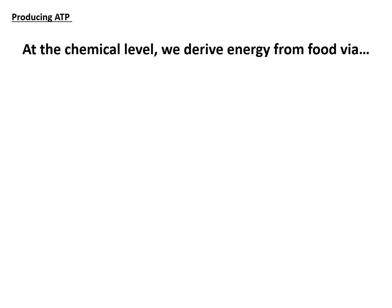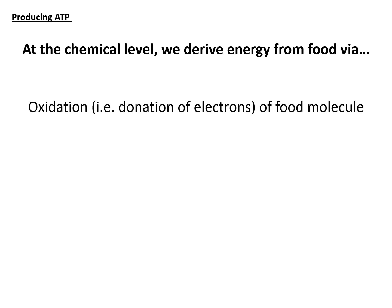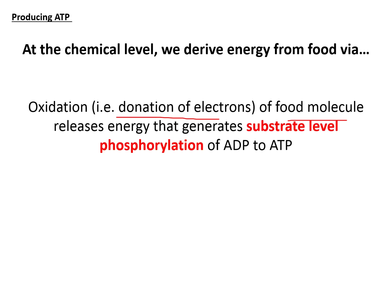At the chemical level, we derive energy from food via oxidation, which is equivalent to the loss of electrons by the food molecule. But why do we need electrons? Because it is from the flow of electrons that we derive energy to make an ATP molecule, by a process known as substrate-level phosphorylation, which involves the direct addition of a phosphate group to an ADP forming an ATP molecule.